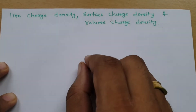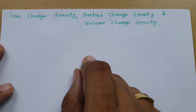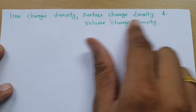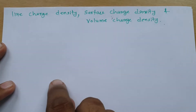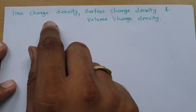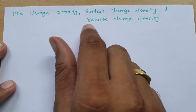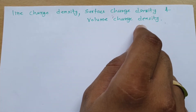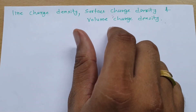Welcome to the Electromagnetics playlist. I, Professor Itesh Dolakya, am going to explain line charge density, surface charge density, and volume charge density in this session. I'll explain the meaning of each, then show you how to calculate line charge, surface charge, and volume charge.